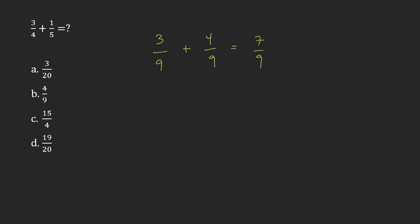If you have the same denominator the whole way through, you can just add the numerators. So 3 plus 4 equals 7. It's easy if the denominator remains the same, you're allowed to do that.